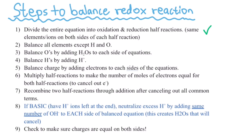Second, you're going to balance all the elements except H and O, so make sure that the number of moles are the same. Third, you're going to balance all the oxygens by adding water to each side of the equation. Then you're going to balance all the hydrogens by adding hydrogen ions to both sides. And then you're going to balance the charge lastly by adding all the electrons to each side. So when you try to recombine these half-reactions, you want to make the number of moles of electrons equal for both half-reactions. This way, when you add them, you're going to have an easier time to cancel out all the electrons and help you cancel out the leftover terms.